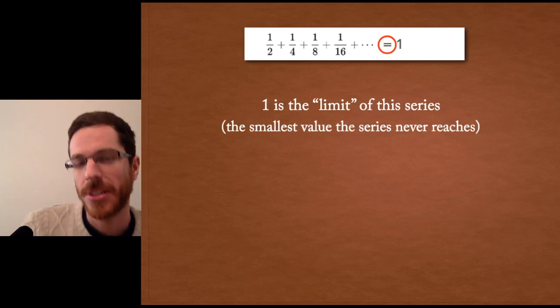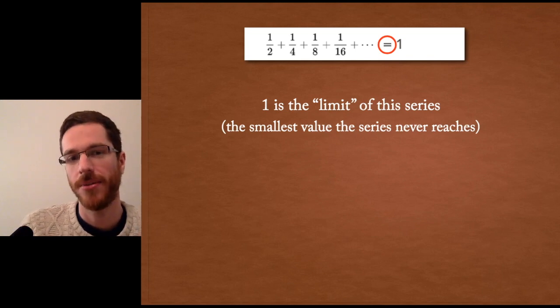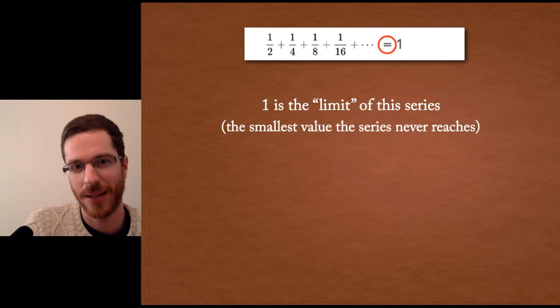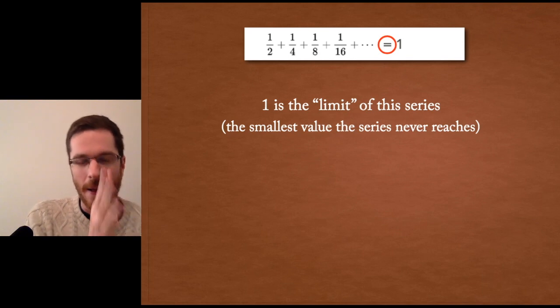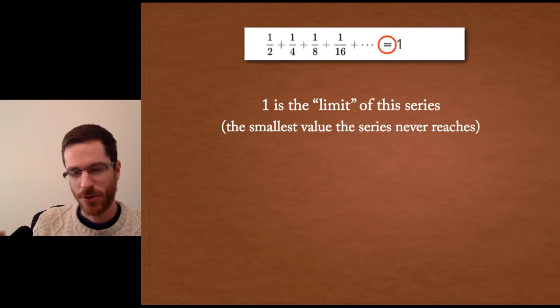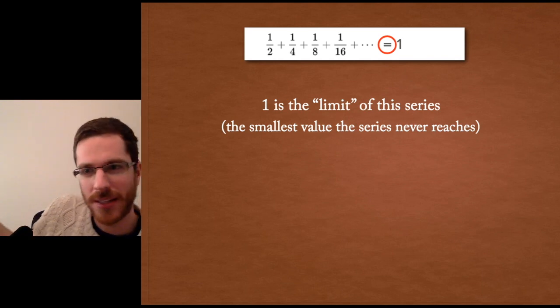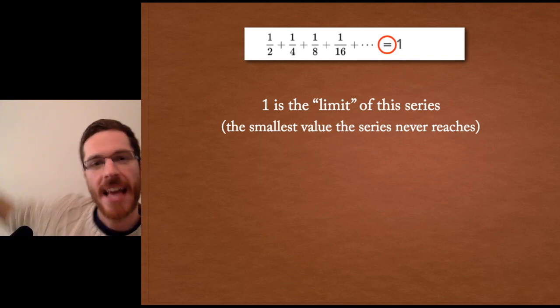The one can be understood as the smallest value that the series never reaches. That's kind of an interesting way to think about the limit in this context. As you add up this infinite series and you get closer and closer and closer to one, you can kind of think of one as this end point that's actually kind of beyond the edge.